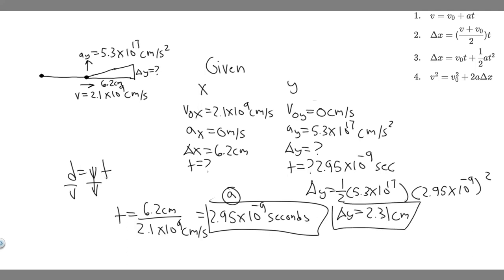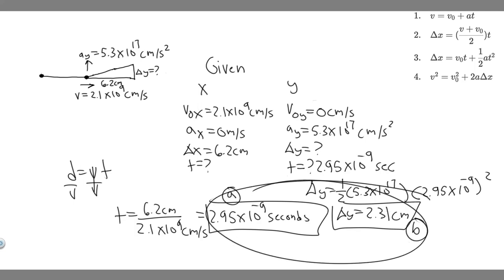So delta y equals 2.31 centimeters — that's the answer to Part B. And t equals 2.95 times 10 to the minus 9 seconds was the answer to Part A. Hopefully you found this useful.